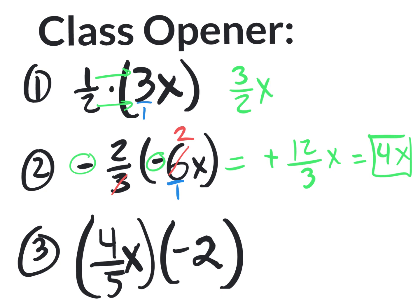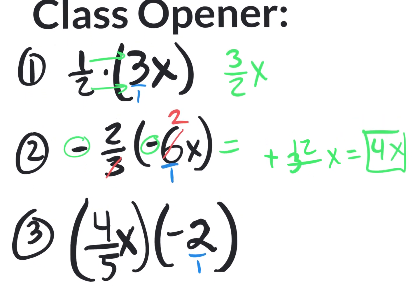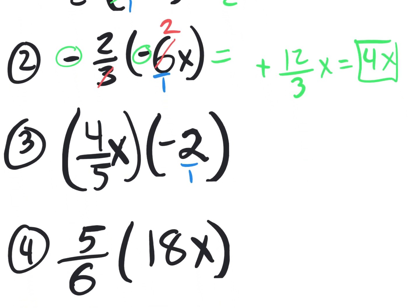I do find it beneficial to reduce first at times, so I recommend that if possible. Right here, when you multiply this fraction times negative two and put that over one, you can't really reduce two over five — there's nothing else to do. So we're going to multiply the top with the top, bottom with the bottom: four times two is eight, five times one is five. A positive times a negative equals a negative, so the answer is negative eight fifths x.